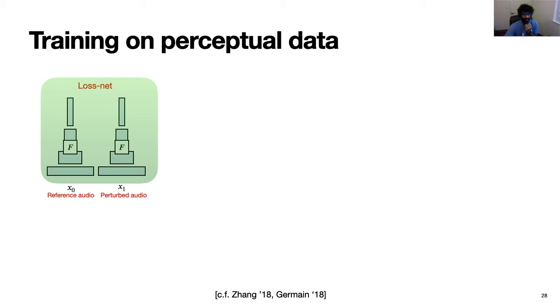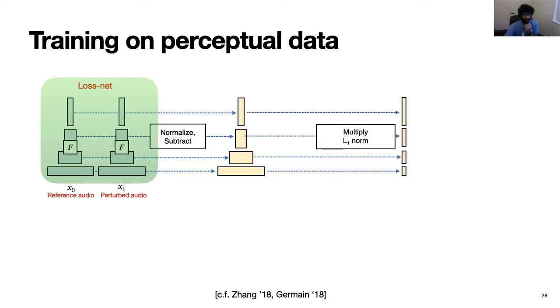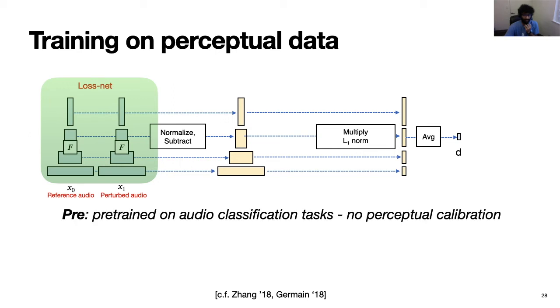So now that we have collected the dataset, we can talk about training our metric. We follow the simple architecture where we have two audio inputs, which are passed into our loss network. We take the difference of the two feature stacks across layers respectively, and then average data points out to get one distance value that quantifies how different these two recordings are. We take four variations of the same model. And this first variation is the PRE, which is short for pre-trained. This model is trained on two audio classification tasks and not in any way on our perceptual dataset.